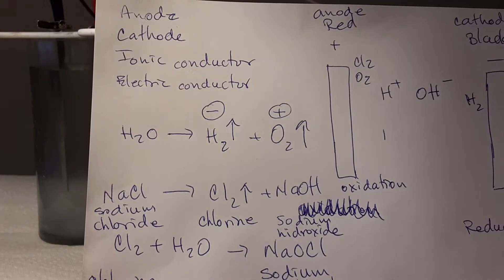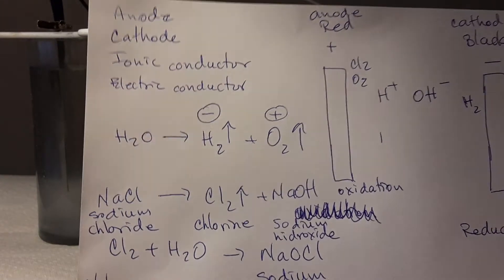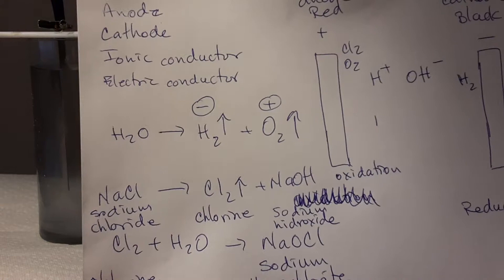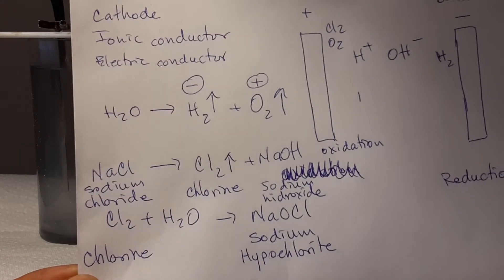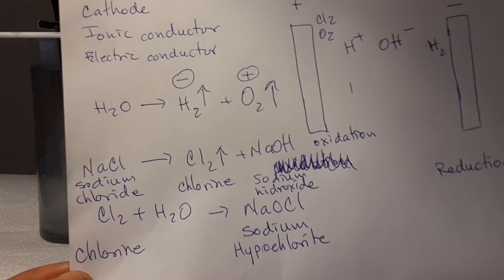We can form sodium hydroxide on the cathodic side. When the chlorine is inside the water, we can obtain sodium hypochlorite, that is the bleach.